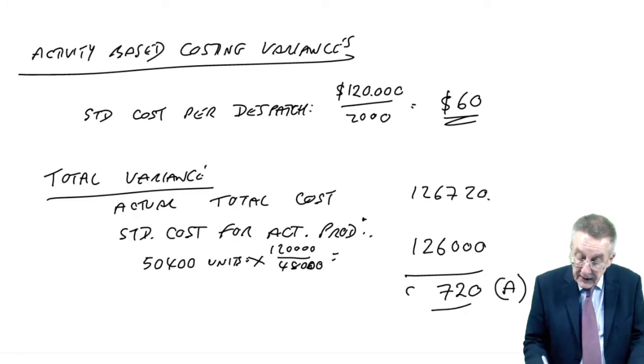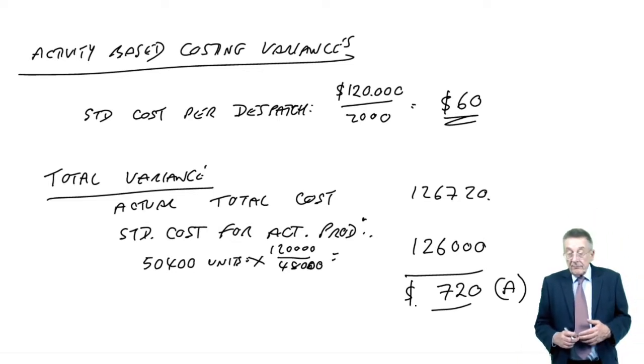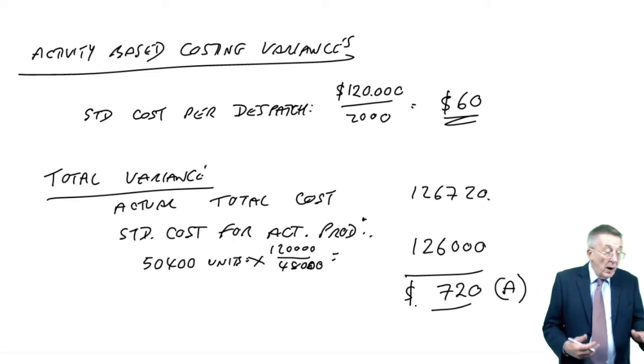And therefore, the total variance is 720 adverse. We've spent more than we would have expected. We want to analyze it. Why has that happened?